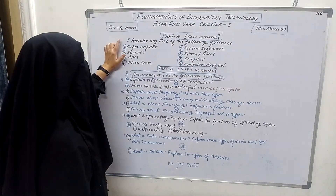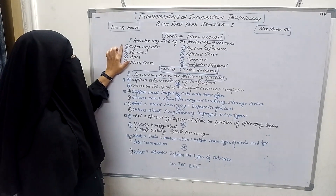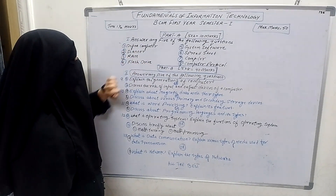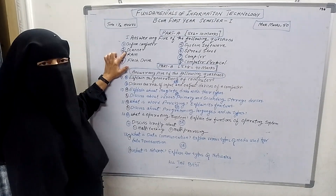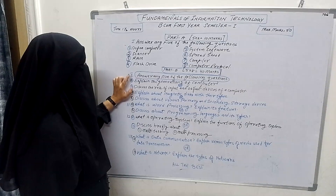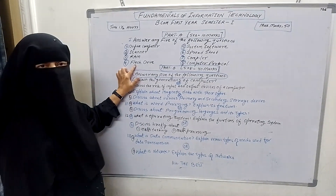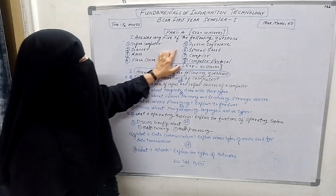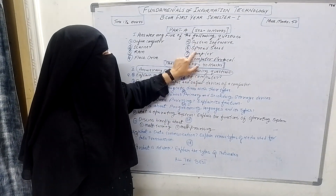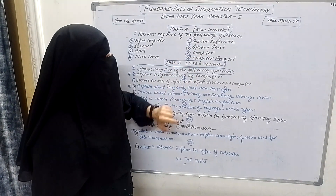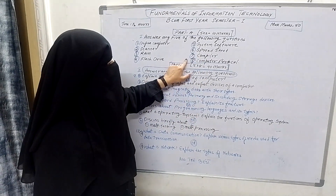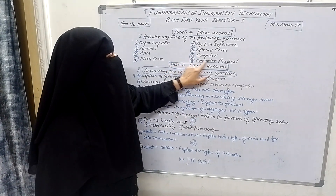The Part A questions are: first, define computer; second, scanner; third, RAM; fourth, flash drive; fifth, system software; sixth, spreadsheet; seventh, compiler; eighth, computer protocol.